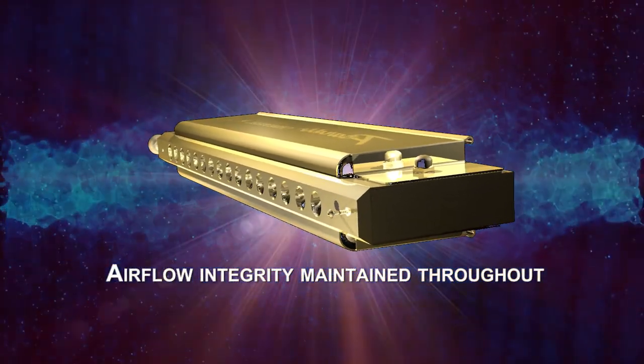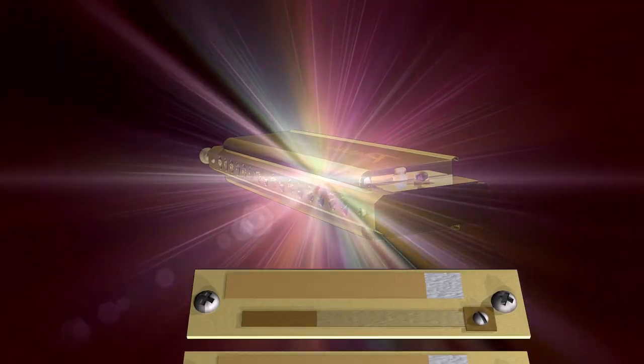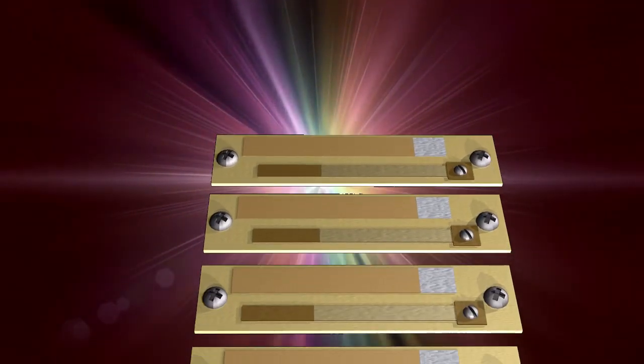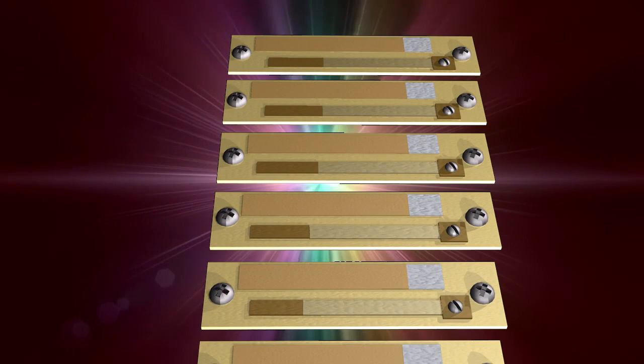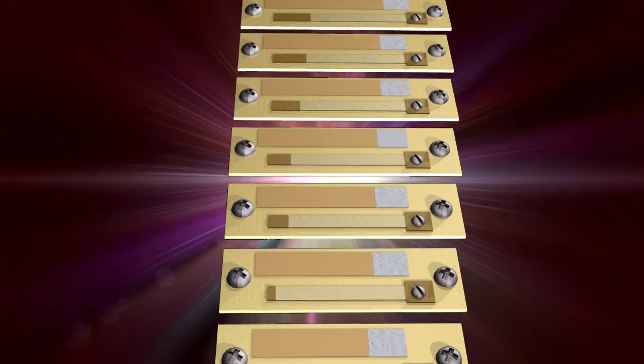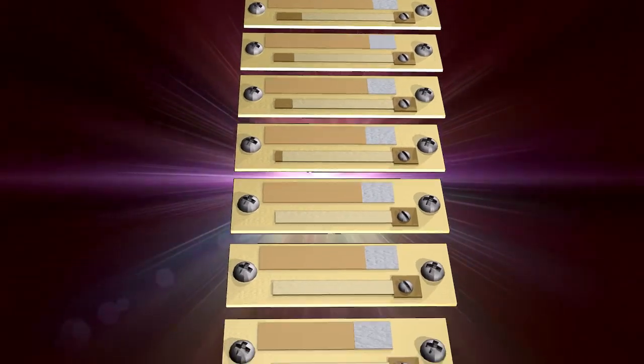That brings us to the most revolutionary feature of this unique instrument: the individual two-note reed plate. Normally all the reeds are riveted to one solid plate that is attached to the comb. Air can leak from all four edges.